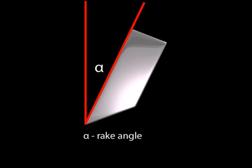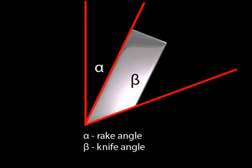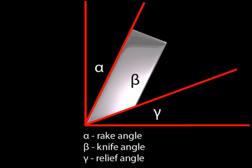There are three major angles to consider when looking at a simple knife edge. There is the rake angle, as denoted by the symbol alpha, knife angle denoted by beta, and relief angle denoted by gamma.